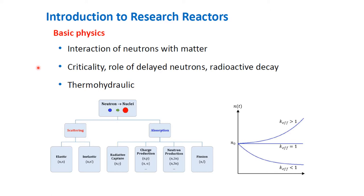The basic physics involved in research reactors is the same as in nuclear power reactors. This includes the interaction of neutrons with matter, criticality, the role of delayed neutrons, radioactive decay, and thermohydraulics. The criticality graph shows the state in which a nuclear chain reaction is self-sustaining — that is, when the reactivity is zero. The effective neutron multiplication factor k-effective is the unit of measurement for criticality. What we always want is k-effective equal to one.